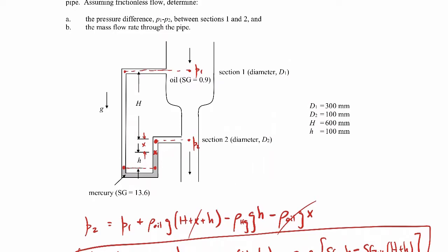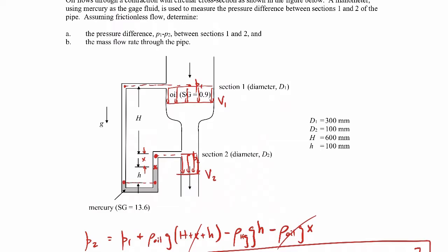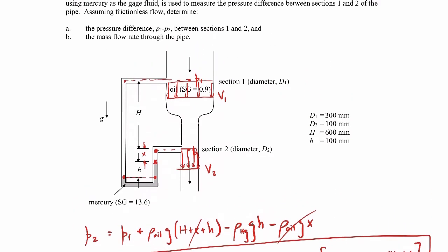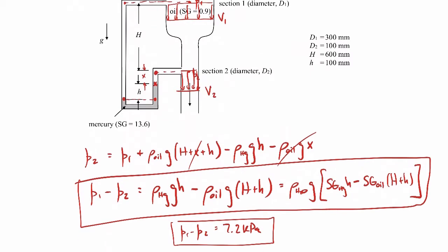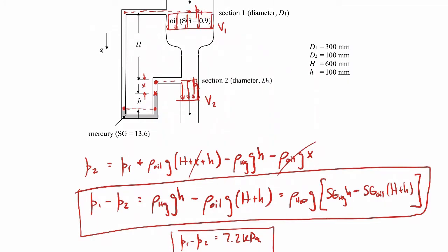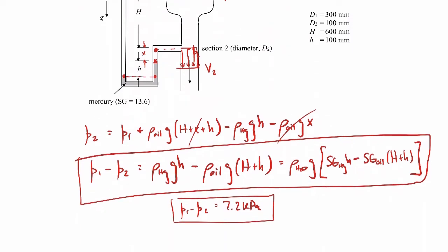To find the mass flow rate, we're first going to assume that the velocity profiles are uniform at each cross section — a uniform velocity v1 at location 1 and v2 at location 2. The reason we can assume this is because we're told it's a frictionless flow, so we don't have to satisfy the no-slip boundary condition at the walls. To find the velocities, we make use of Bernoulli's equation, which will relate the pressure difference to the velocity difference.